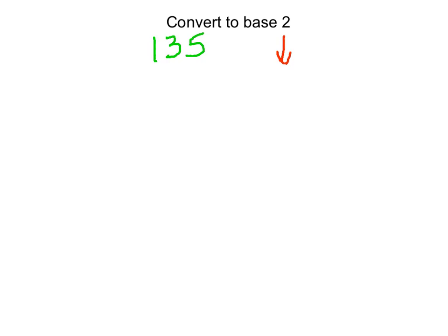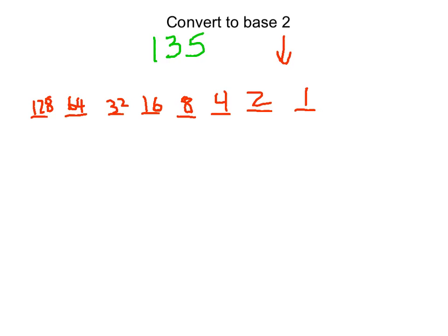As soon as I see that it's base 2, I start by labeling each column. We always have the 1s column, and then we go up by powers of 2, continually multiplying by 2: 1s, 2s, 4s, 8s, 16s, 32s, 64s, and 128. I'll stop there because if I were to multiply by 2 again, I'd get 256, which is larger than 135. So I can erase that column — these are the only columns I need.